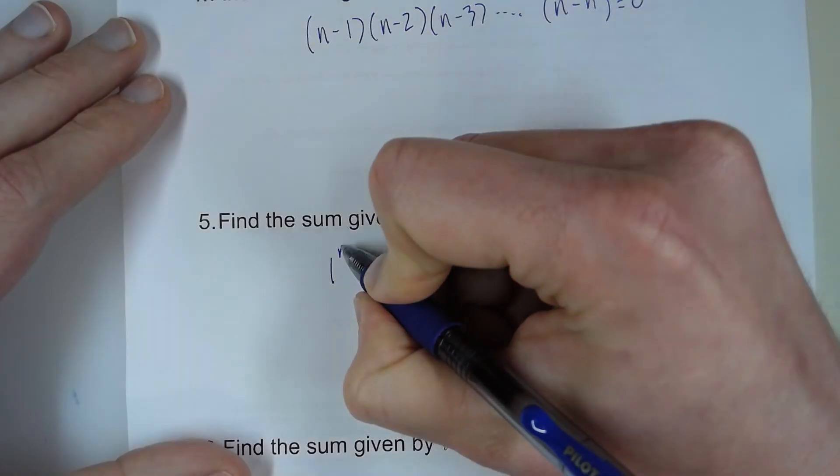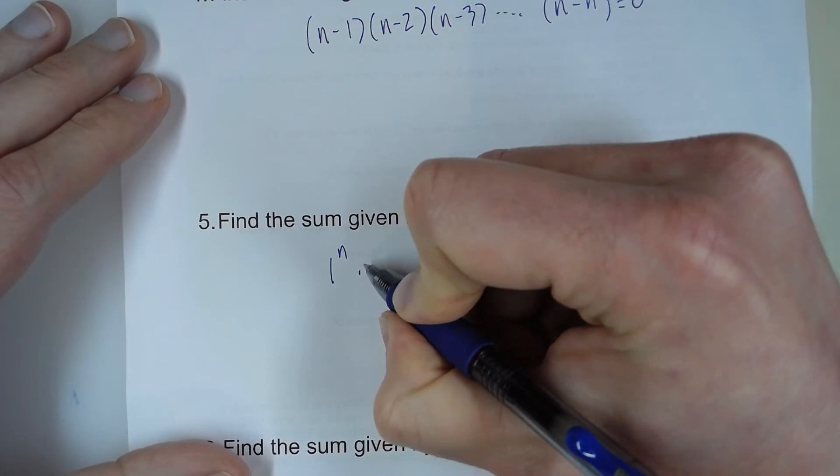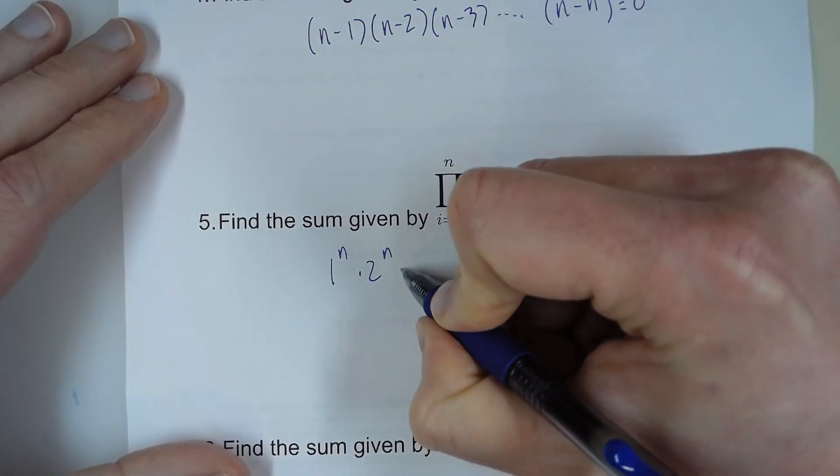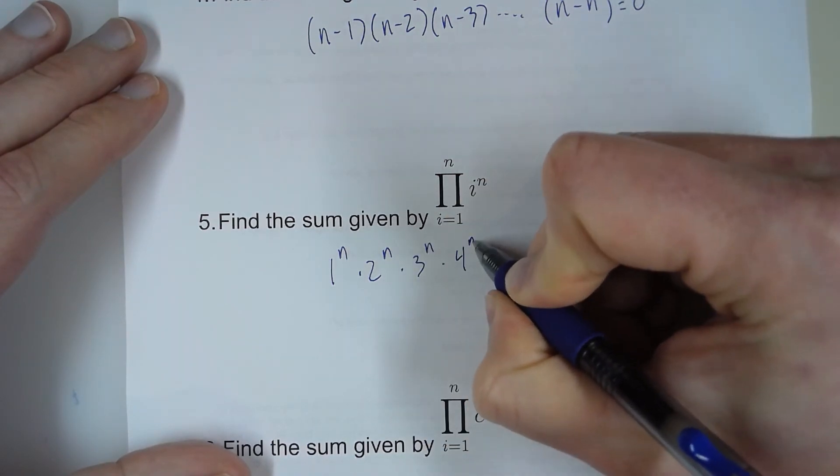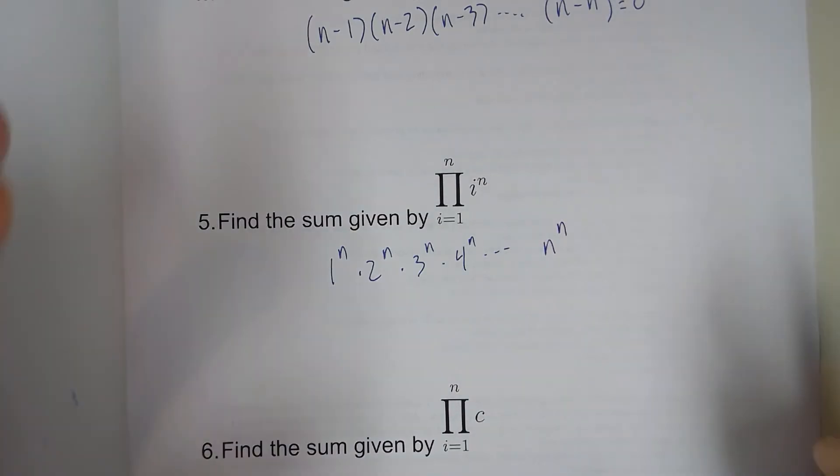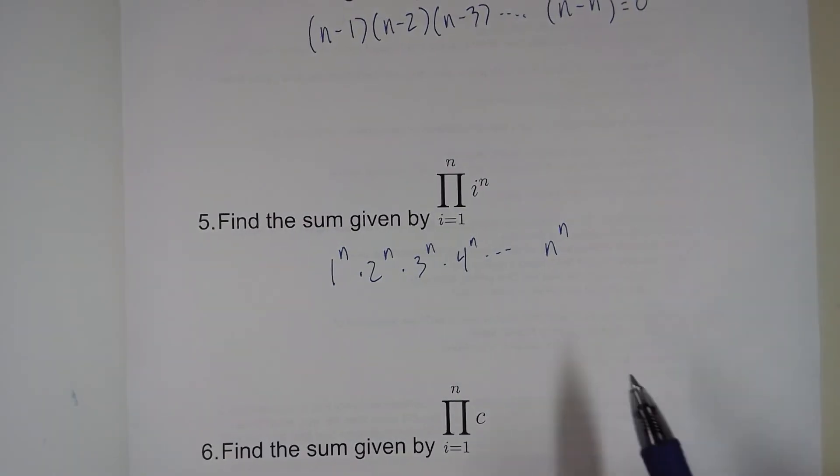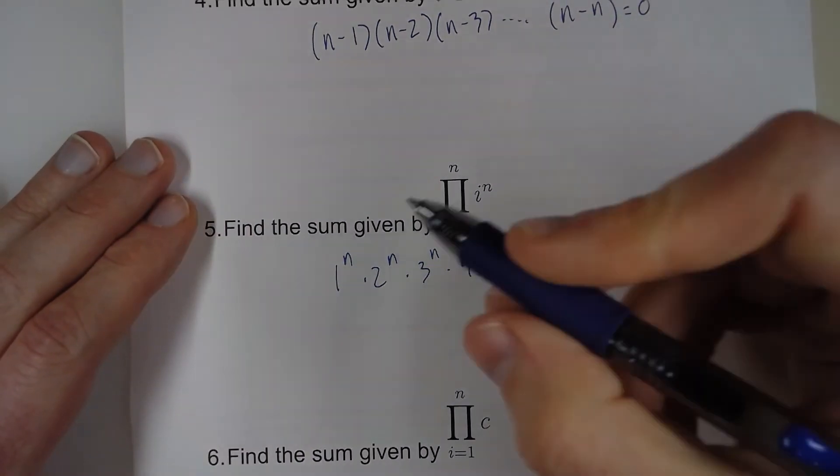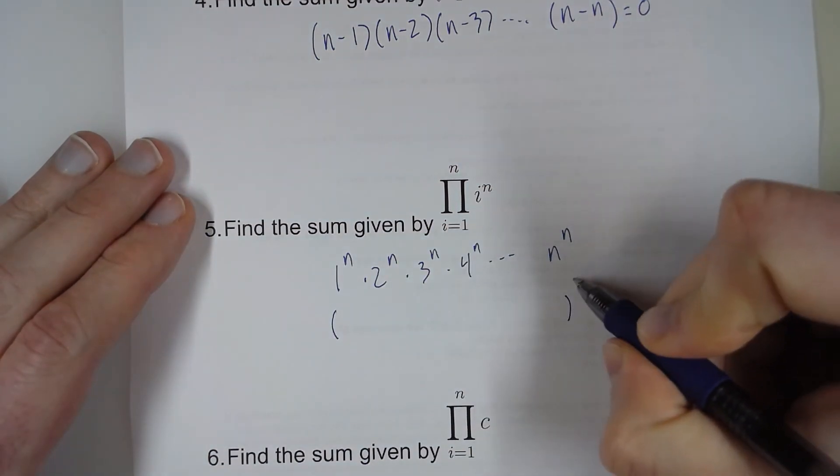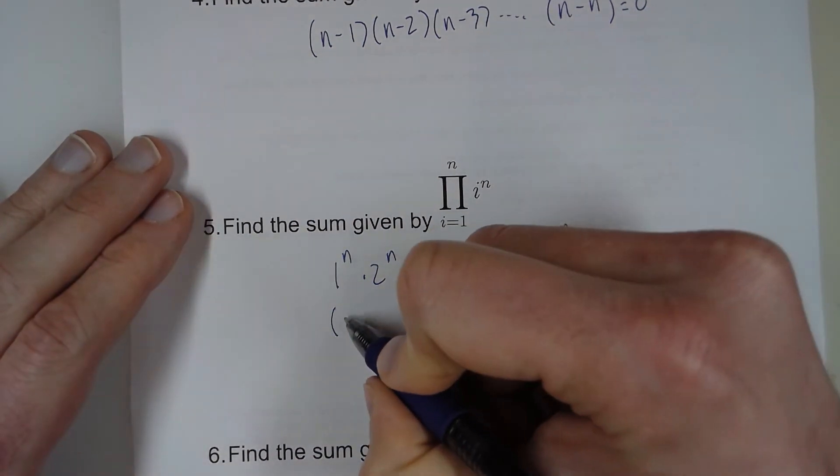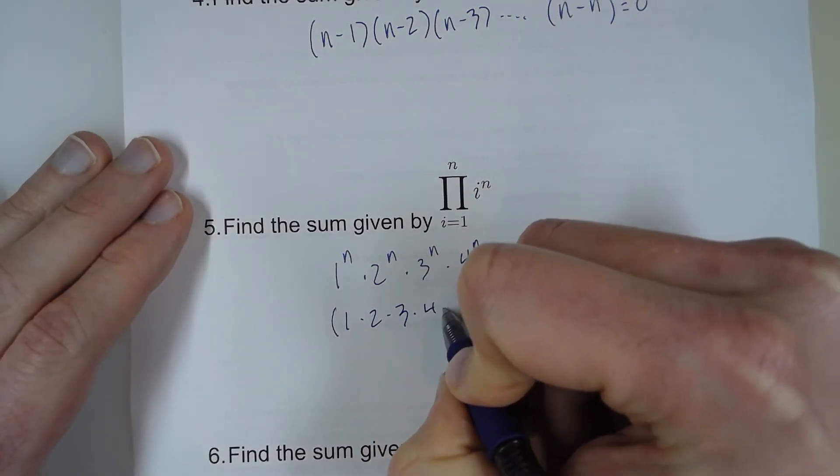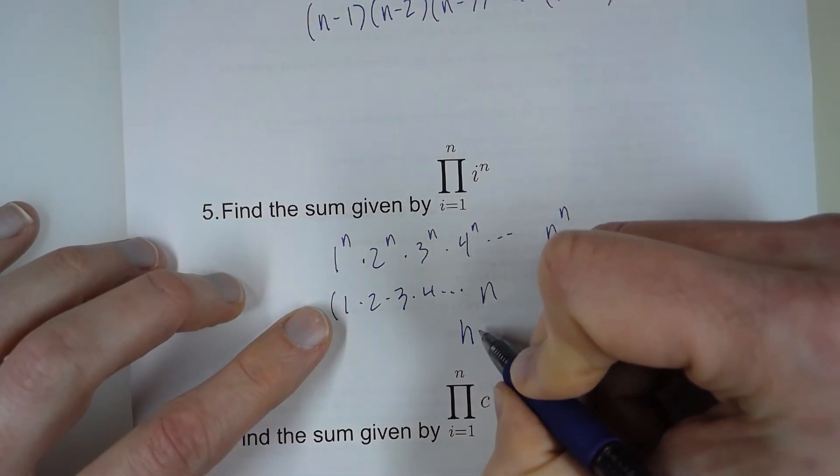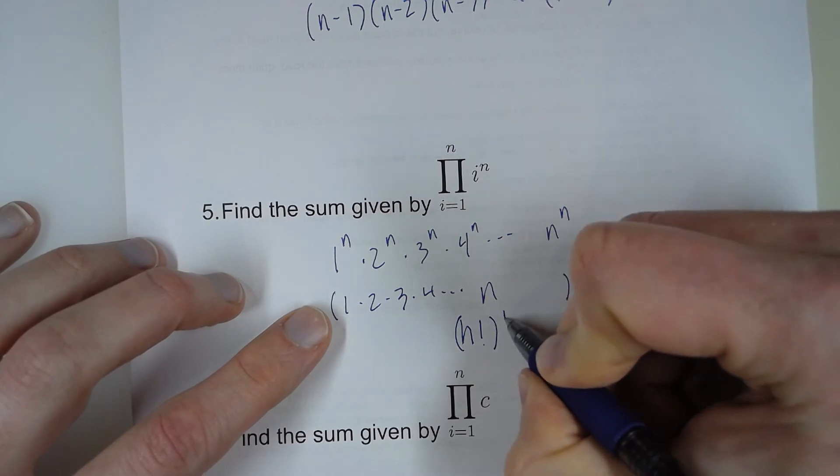For number 5, we're plugging in 1 to n to the nth power times 2 to the nth power times 3 to the nth power times 4 to the nth power, dot dot dot, all the way to n to the nth power. How can we simplify this? Well, everything is carrying the exponent of being raised to the nth power. So that means we can write everything under the same exponent, 1 times 2 times 3 times 4, dot dot dot, n. And we can simplify this to just n factorial to the nth power.